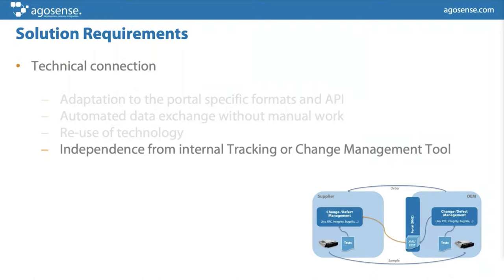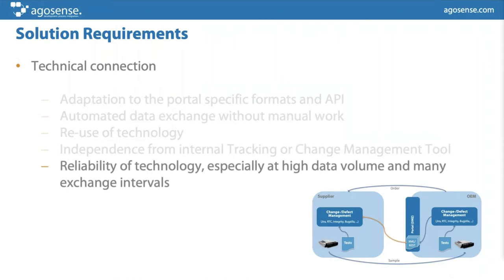With a system like Symphony, you can be completely independent from your internal tracking or change management tool. Customers often extend or change their system — moving from Integrity to Jira or something else — and that should be possible without large interruptions or data loss. The system should also be reliable especially in terms of data volume and exchange intervals, with features that provide control over those aspects.